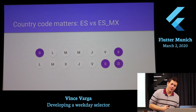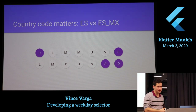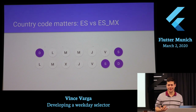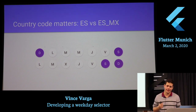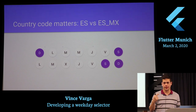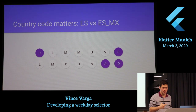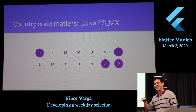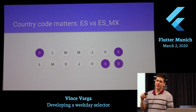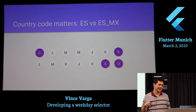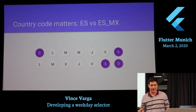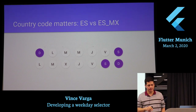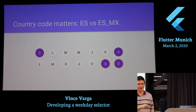Another thing is that even the country code matters. This is Spanish from Spain and Mexican Spanish — quite interesting. If I can trust the INTL library, in Mexico they start with Sunday and in Spain they start with Monday. You can also see that Wednesday is written differently: in Spain they just write an X, and in Mexico they write an M. The reason is that in Spanish there are two words starting with M — Martes and Miércoles.